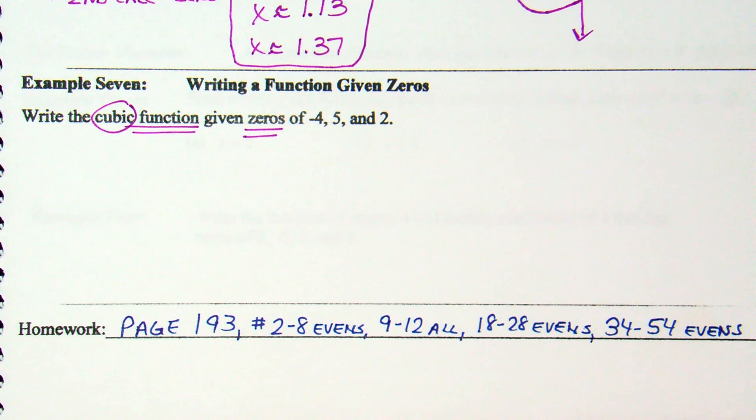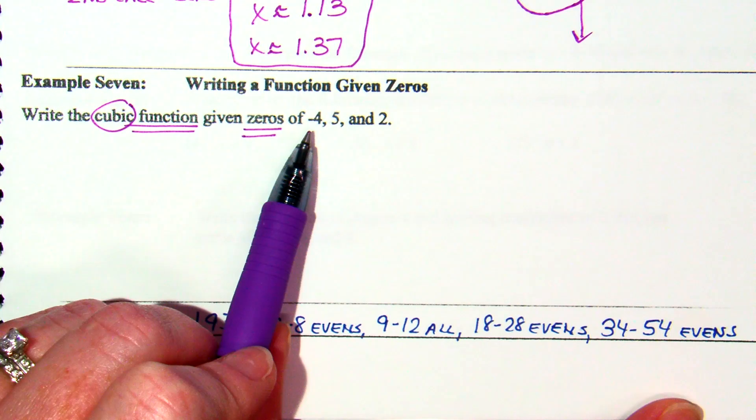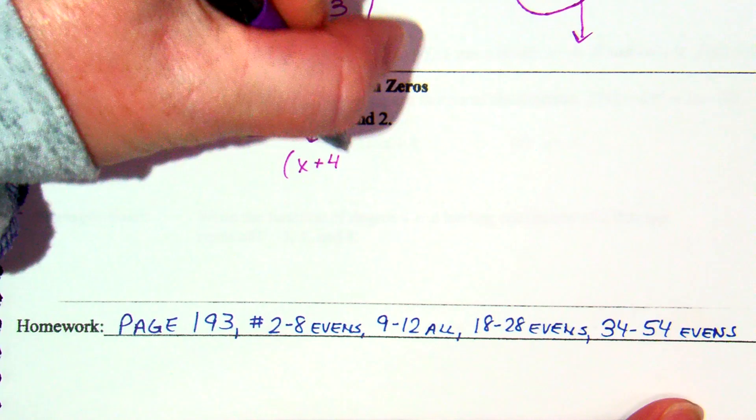Okay. So, Stella just said x plus 4, x minus 5, x minus 2. Does that make sense? Because what do we know?